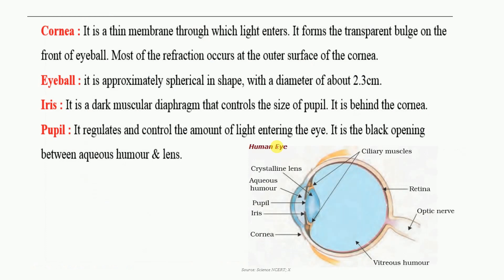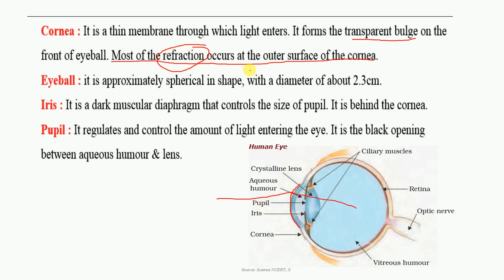Now let's see the important parts. First is the cornea. The cornea is a thin transparent membrane through which light enters the eye. It forms a transparent bulge at the front. Most importantly, most of the refraction occurs at the outer surface of the cornea — it is almost doing some function of the lens by redirecting light into the eye.